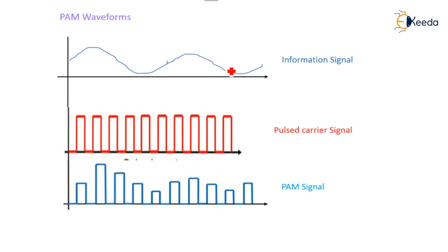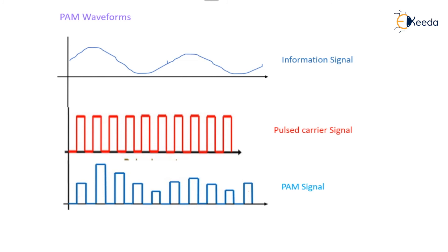Now we will see the waveform. Here the carrier pulses are given, so the pulse carrier signal is there. The output of the carrier pulses will be changed according to the modulating signal, and thus the pulse amplitude modulation is verified. This is all about the PAM generation and detection. Thank you for watching.